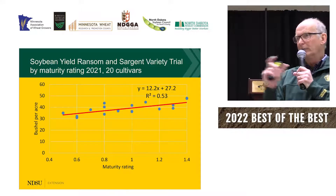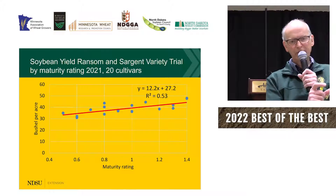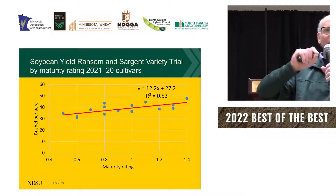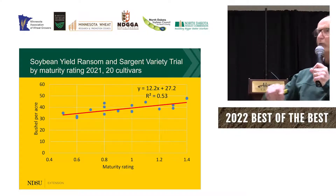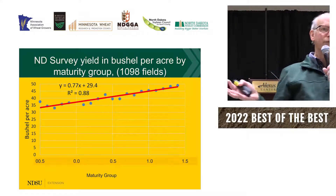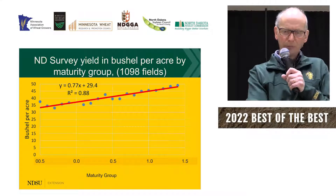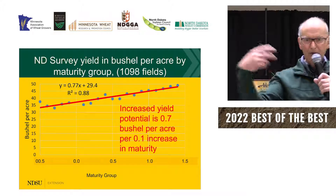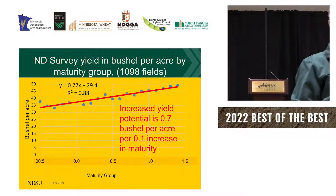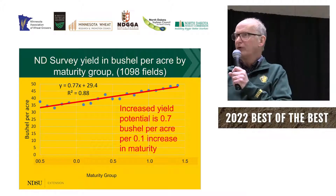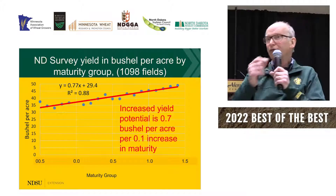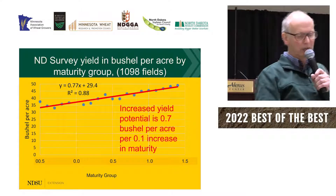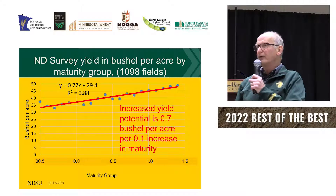The other factor we make decisions on is variety maturity. This data from last year shows that if you have a later maturing variety, we typically see a huge increase in potential. Looking at the big dataset from over a thousand fields, maturity on the bottom goes from 00 to 1.5, and yields average out with an increase. Translating that, it would be roughly 0.7 of a bushel increase per 0.1 maturity increase — if you go from a 0.5 to a 0.6, we could expect a yield increase.